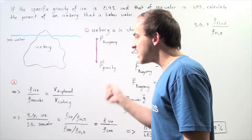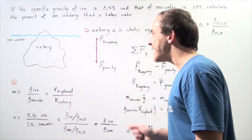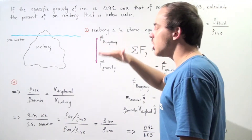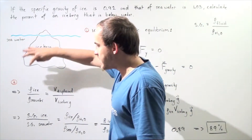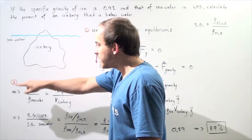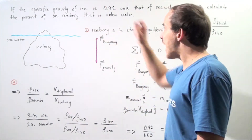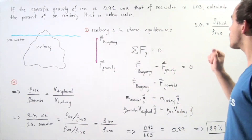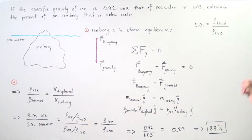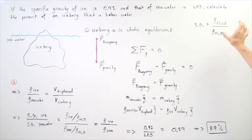If we calculate this ratio and multiply it by 100, that gives us the percentage of the iceberg found below seawater. To find the ratio of the density of ice to the density of seawater, we use the given specific gravities: 0.92 for ice and 1.03 for seawater. Recall that specific gravity is the ratio of the density of a substance to the density of water (H₂O).